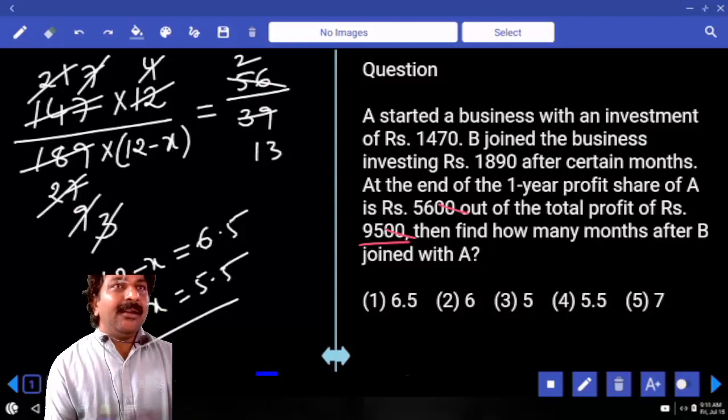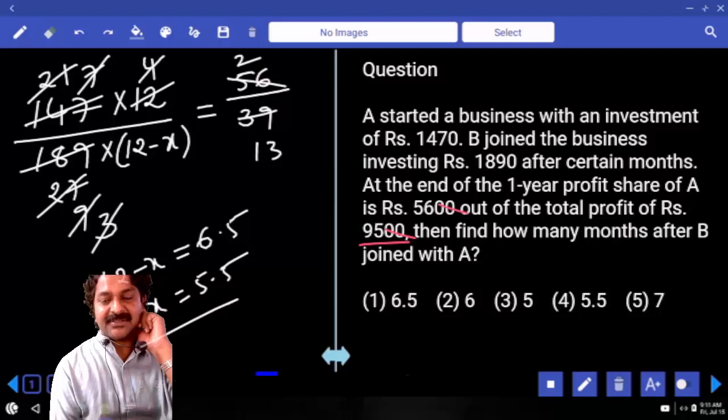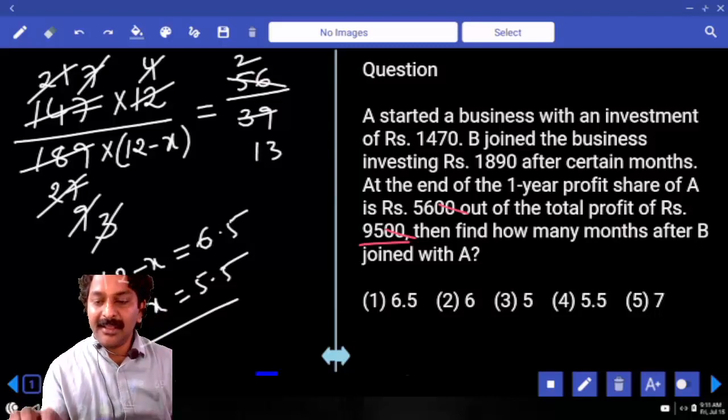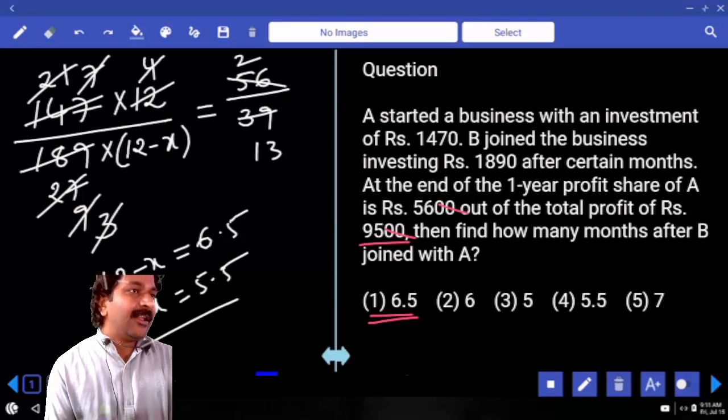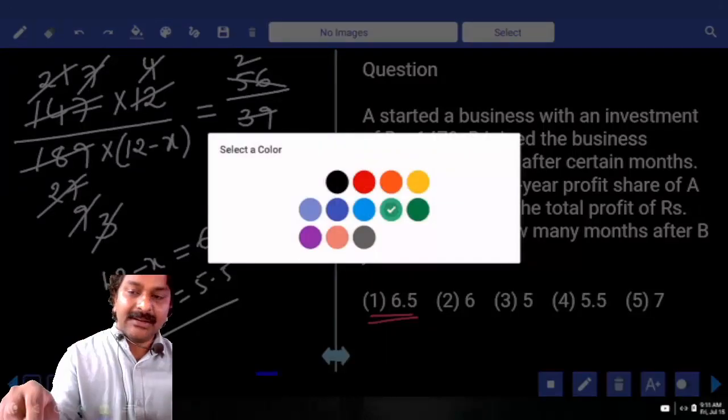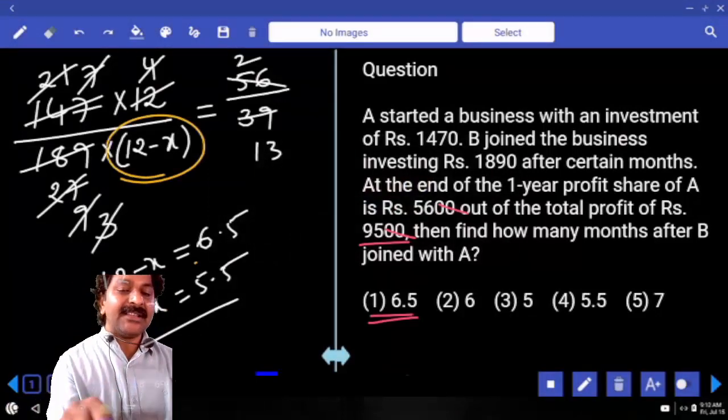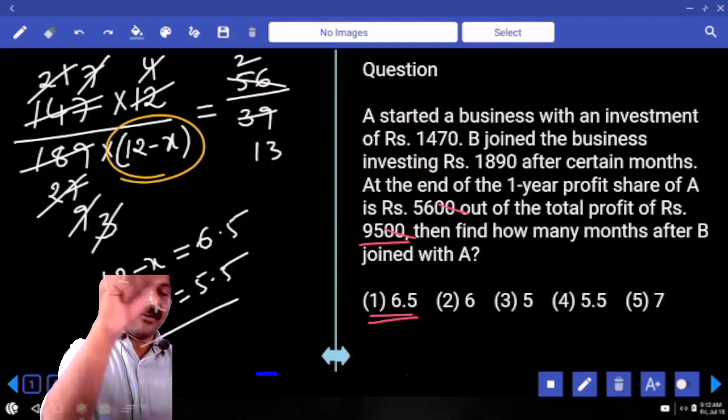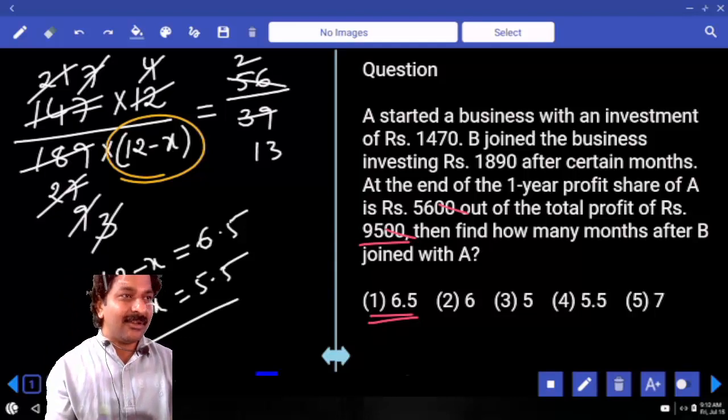See, you have 6.5 and 5.5 both in your options, and 6.5 is there in first option. That means examiner is trying to trap you. If you start taking the X value, you will directly get X is equal to 6.5 and after looking at first option, you feel that you got it.